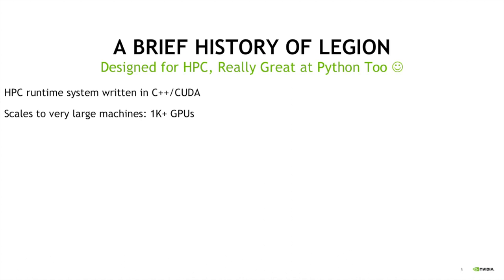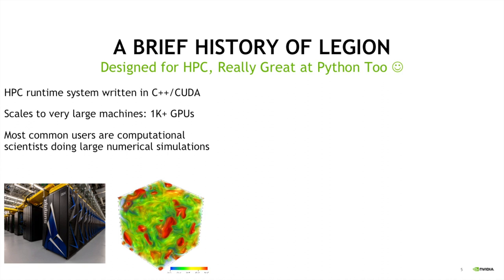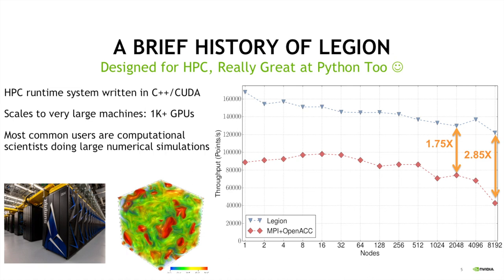Legion is an HPC runtime system written entirely in C++ and CUDA. It scales to very large machines — thousands of GPUs like in the Summit supercomputer. Most of our customers today are computational scientists doing very large-scale numerical simulations. This is a combustion simulation done for a Gordon Bell submission a few years ago. Legion is running on 8,000 GPUs and is able to outperform a hand-tuned MPI plus OpenACC implementation developed over many years. By the time we're out at 8,000 GPUs, we're about 3x faster on this particular application.